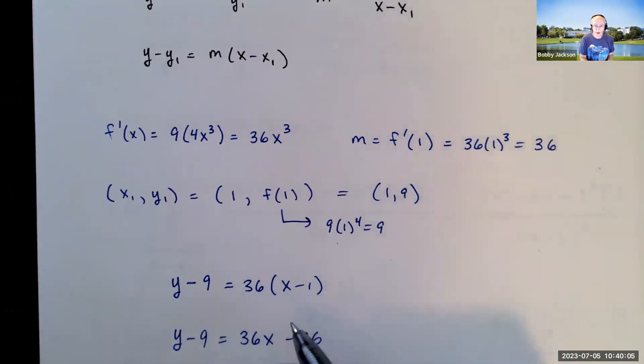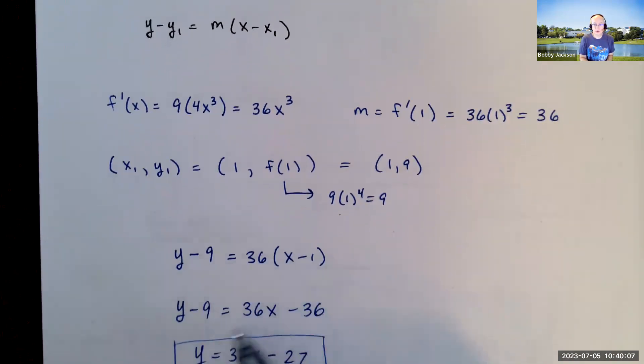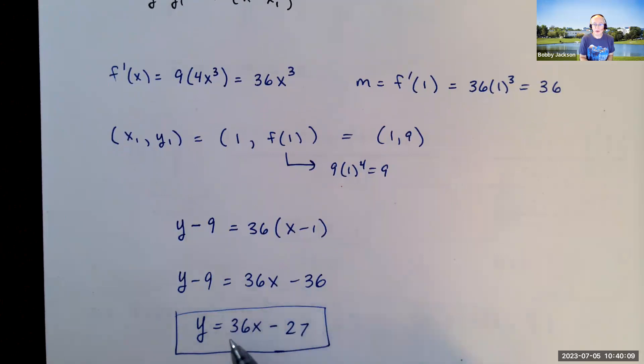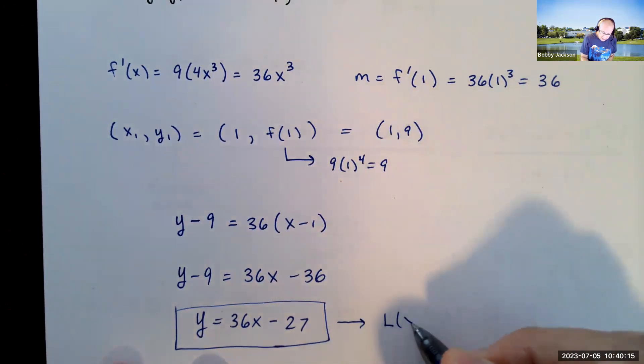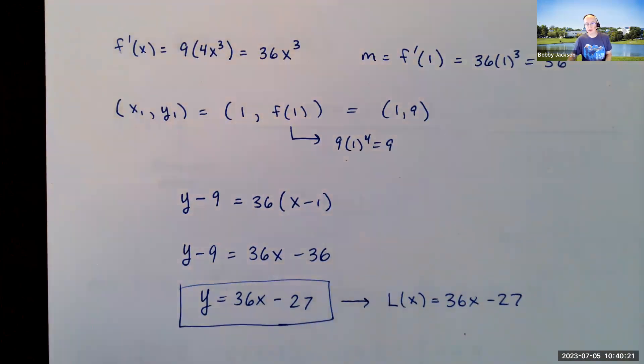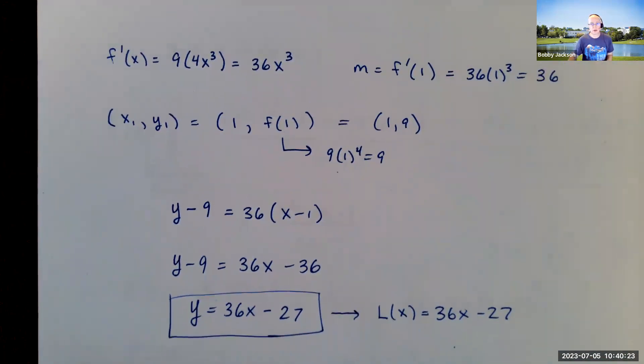And so here's the equation. You typically want to solve for y to get the linearization. So I distribute the 36, and then I add 9 to both sides, and I get that. So there's the linearization, which could be written then as l of x is 36x minus 27. So that's all there is to it. Linearization, just basically finding the equation of the tangent line. Hope this helps.